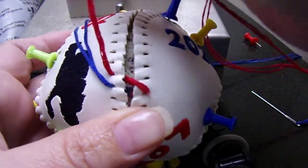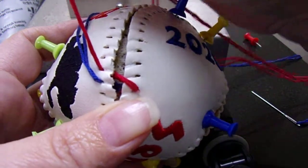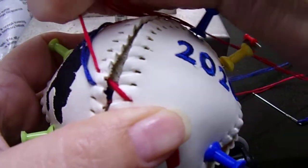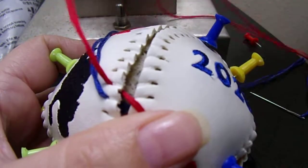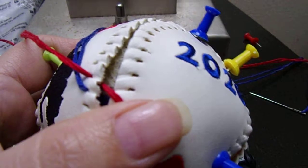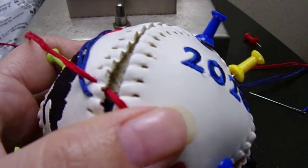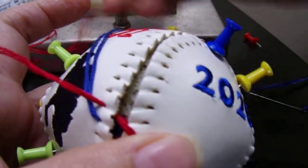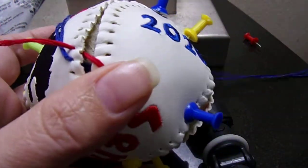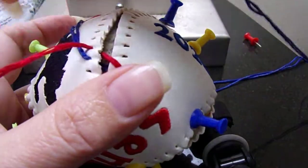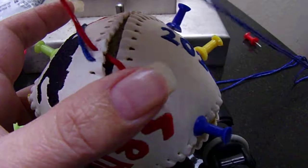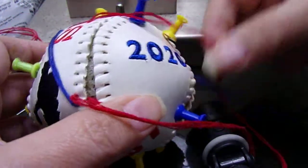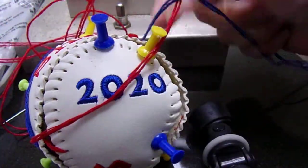When you pull it tight, do not pull your thread this way because you can tear through the holes. Pull it this way. Once I get the other thread, then I'll be able to pull those tight and show you. Usually I hold the ball in my lap and do it, and it goes a whole lot quicker. I want to come under that thread. I don't want that red thread to be on top.